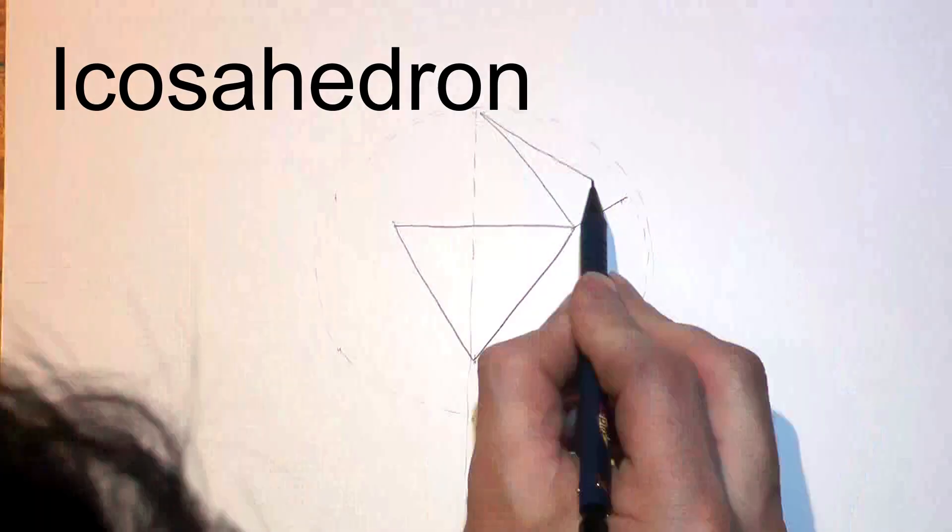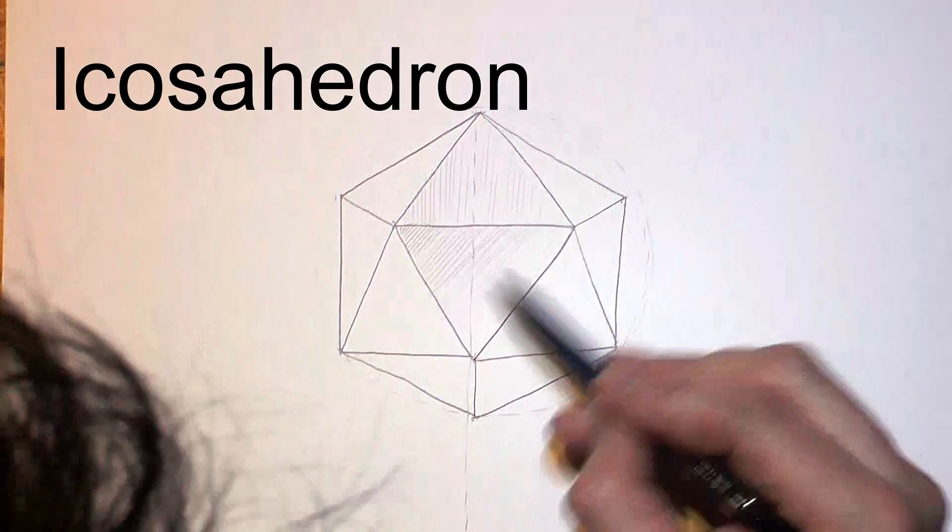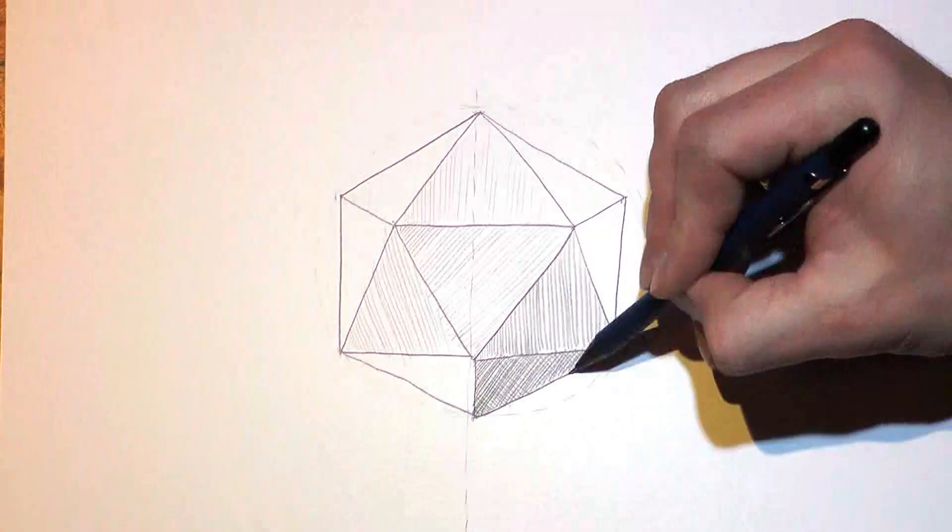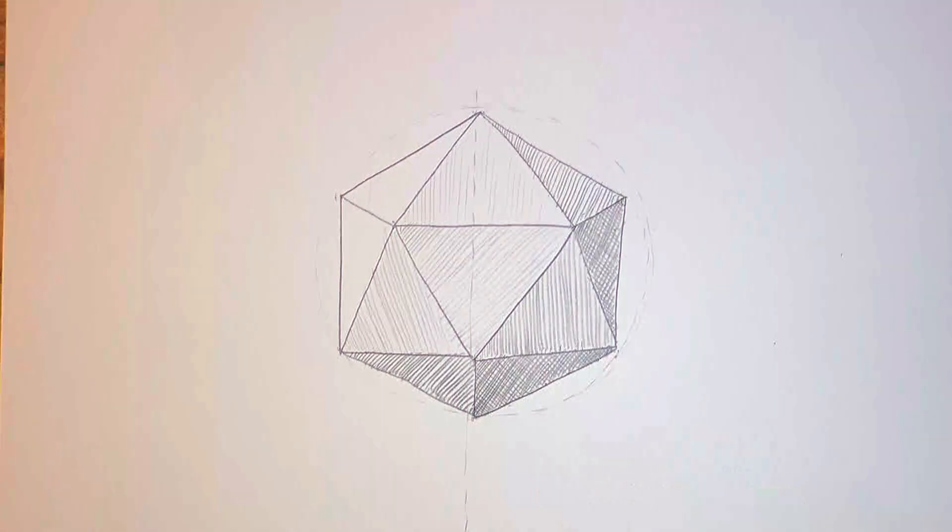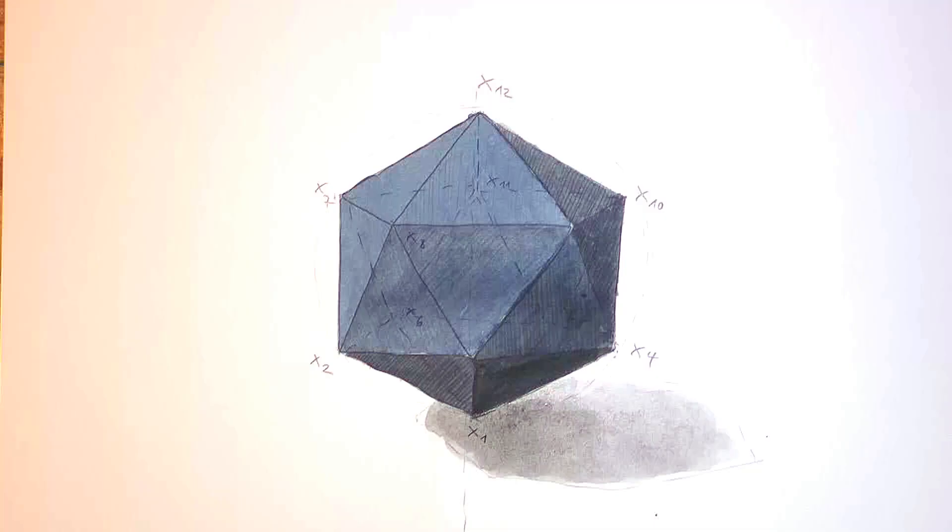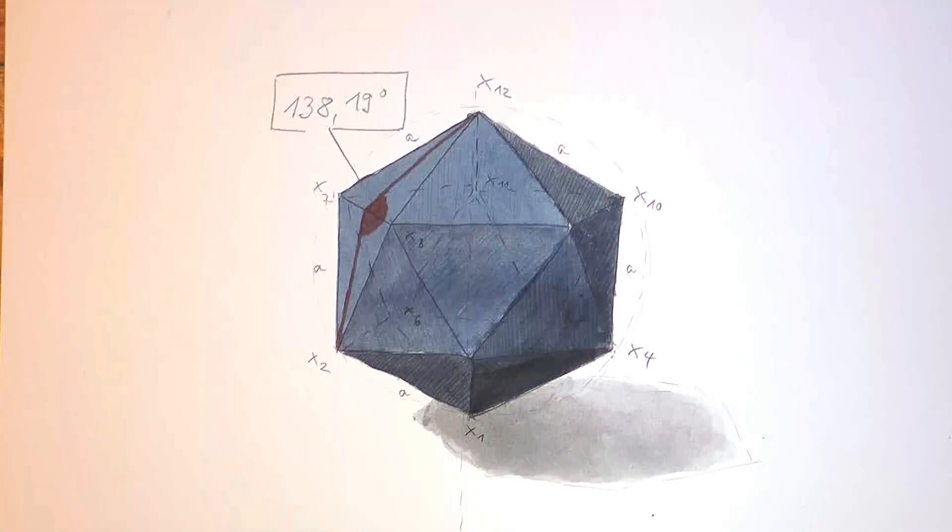Making an icosahedron is not easy. It has 20 faces that are equilateral triangles. Using the technique from making the dodecahedron isn't possible, because we would have to cut at many different angles, and also to tilt the blade more than 45 degrees.